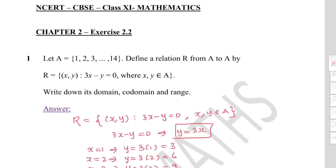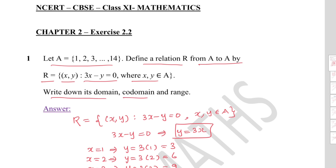Let us discuss Class 11 Mathematics Chapter 2, Exercise 2.2, Question 1. Let A be the set of natural numbers from 1 to 14. Define a relation R from A to A by R = {(x, y) : 3x - y = 0}, where x and y belong to A. Write down its domain, co-domain, and range.